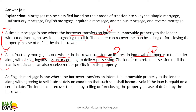English mortgage is different — it includes an agreement to sell. In case of default, the property is sold at a predetermined price to the lender. However, if you repay the loan on time, the agreement to sell becomes void.